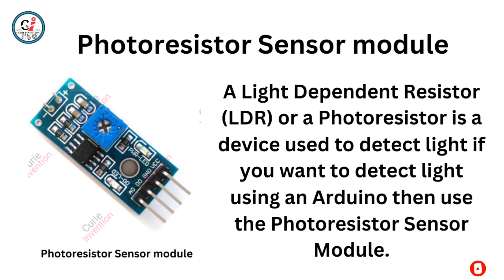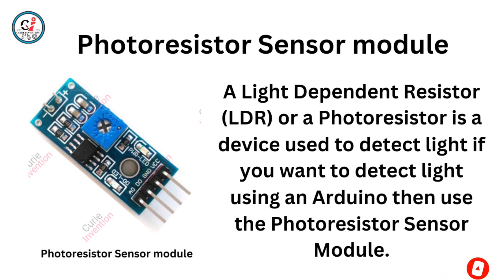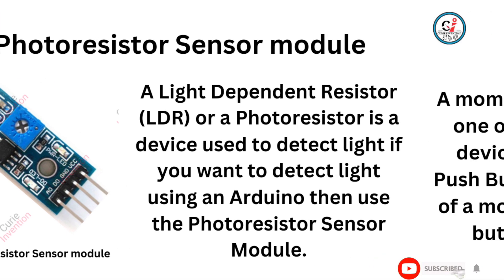Photoresistor Sensor Module. A light-dependent resistor, or photoresistor, is a device used to detect light. If you want to detect light using an Arduino, then use the Photoresistor Sensor Module.